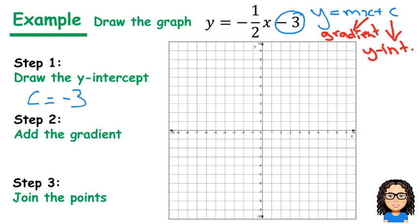So our value of c is negative 3. That tells me it cuts the y-axis at negative 3. So I'm going to draw that coordinate point right there.